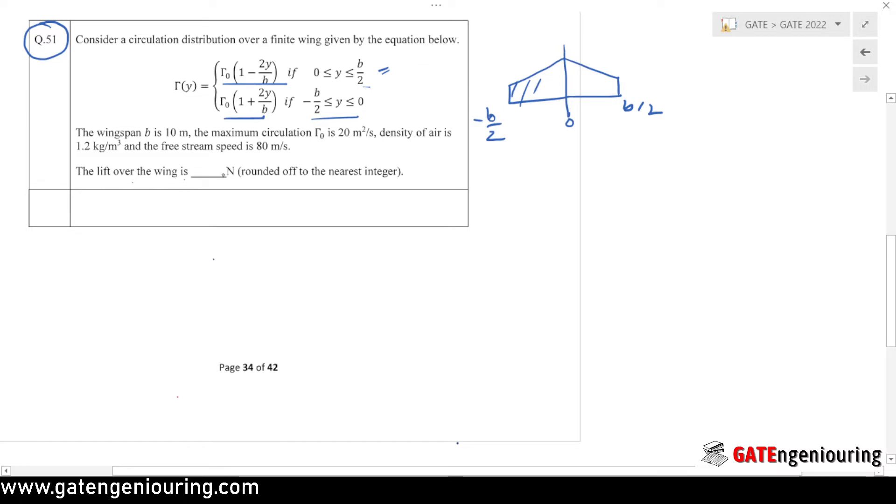It is asked that lift over the wing in newtons. We know that lift per unit span is given by this formula: ρ∞ u∞ into the circulation. Circulation we can find out from here and put the value of circulation here, and we'll be getting the lift per unit span which has the units of newton per meter.